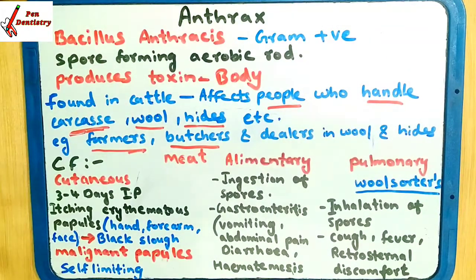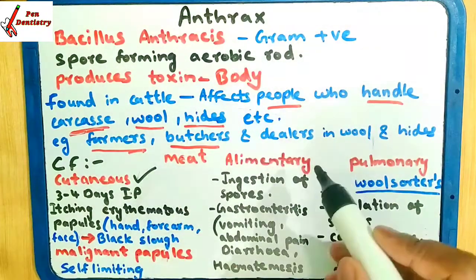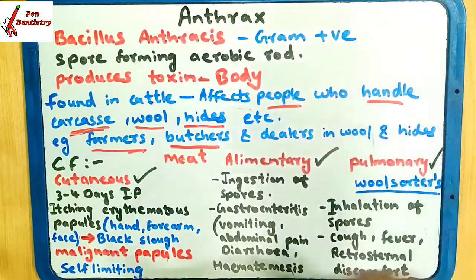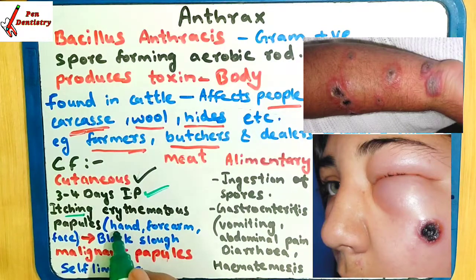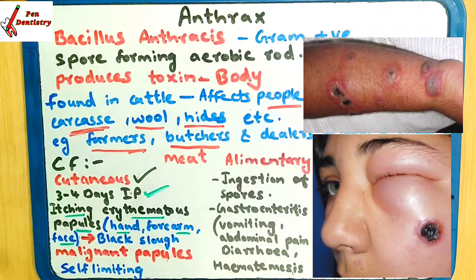Unke andar kya production hota hai? Bacillus anthracis jo create karta hai anthrax disease. Ab clinical features kya hai is disease ka? Yeh disease teen types mein hoti hai. Pahela type hai cutaneous type hoga. Second type hai alimentary type hoga. And last one type hai pulmonary type. Ab pahela hum dekhenge cutaneous type. Cutaneous type mein kya hota hai? Yeh 3 se 4 days, inka incubation period hota hai. Incubation period 3 se 4 days mein yeh disease ho jati hai. Disease hone ke baad kya hota hai? Udher itching hogi - kaunse region mein itching hogi? Hands mein, forearm mein, aur face mein. Itching hogi, erythema, redness ho jayega, aur papules ban jayega. Halka hardening ho jayega aur swelling ho jayega. Papules means swelling with elevation.